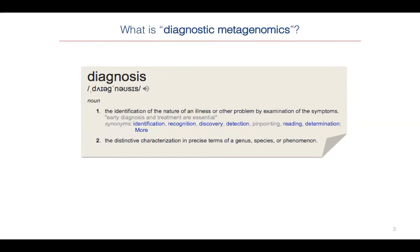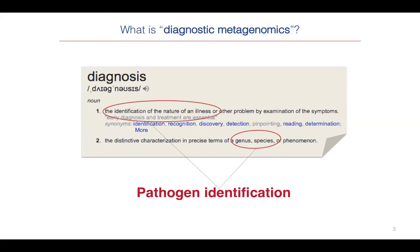The definition in a dictionary of the word diagnosis actually has two parts to it. The first is the one we all think about — identifying the nature of an illness by working out what the symptoms look like. The second part is characterization in the precise terms of genus, species, or phenomenon. Between those two things, they really point to pathogen identification.